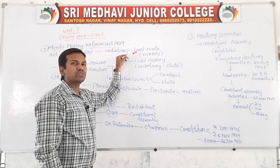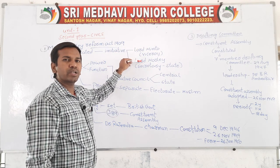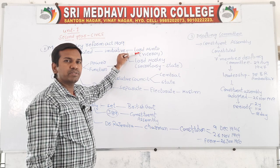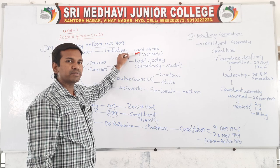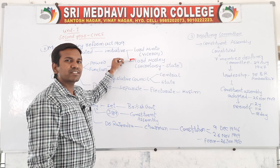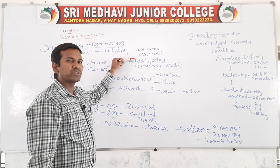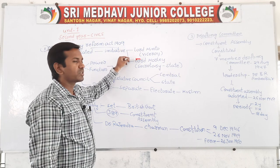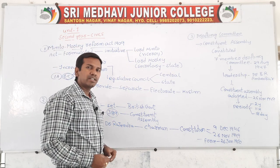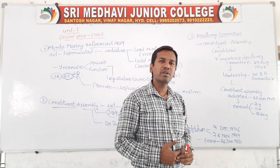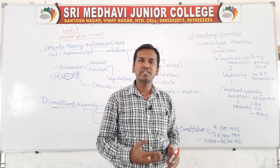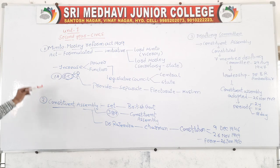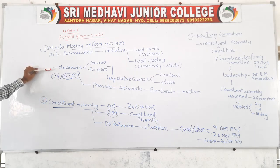The Minto-Morley Reform Act was implemented in 1909 and was formulated by two people — one is called Lord Minto and the other is Lord Morley. Lord Minto was actually the Viceroy, who is considered as the head of India. Lord Morley was the Secretary of State, the second position after Viceroy. They formulated this act in 1909 and named it the Minto-Morley Reform Act.